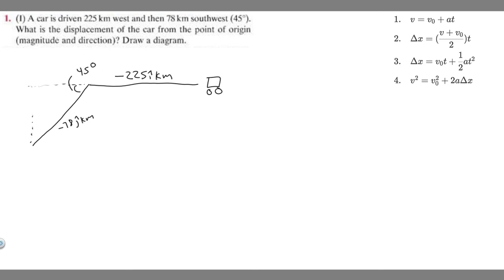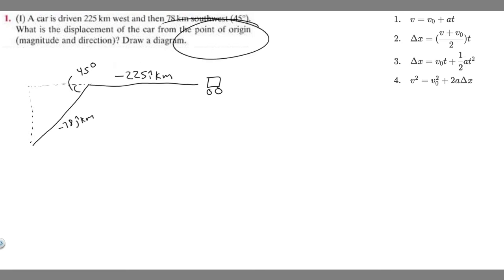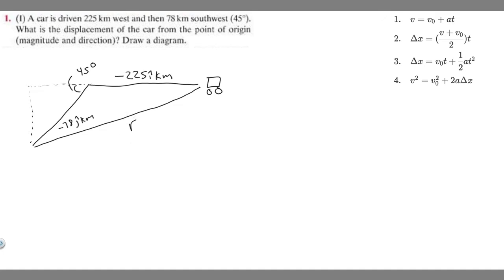If we draw this, it's going to look like a triangle. What they're asking us to find is the displacement of the car from the point of origin — basically this distance right here. We're trying to solve for r. To do that, we first need to find these two component lengths, so we're going to use trig.